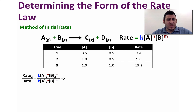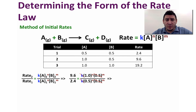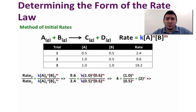Replacing each term with its value, we get 9.6 divided by 2.4. Since the concentration of B is constant across trials 1 and 2, we can cancel the 0.5 to the power M terms. This leaves us with 9.6 divided by 2.4 equals 4, and 1 divided by 0.5 all to the power N equals 2 to the power N. Since 2 squared equals 4, N is equal to 2.